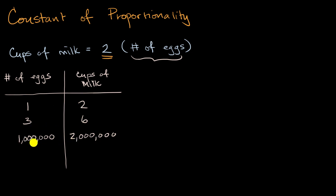And you can see that this is a proportional relationship. To go from number of eggs to cups of milk, we indeed multiplied by two every time. That came straight from this equation. And you can also see, whenever you multiply your number of eggs by a certain amount, you're multiplying your cups of milk by the same amount. If I multiply my eggs by a million, I'm multiplying my cups of milk by a million. So this is clearly a proportional relationship. But let's get a little bit more practice identifying the constant of proportionality.